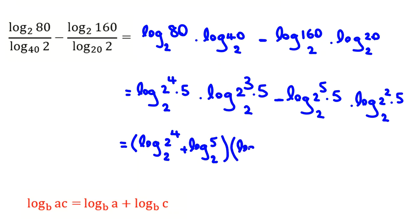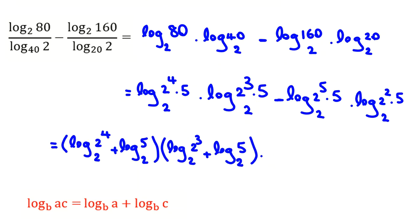This times log base 2 of 2 cubed plus log base 2 of 5. Now, for this part, I can write minus log base 2 of 2 to the 5 plus log base 2 of 5.